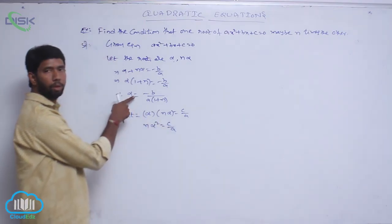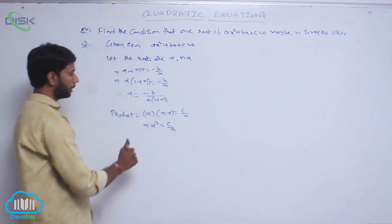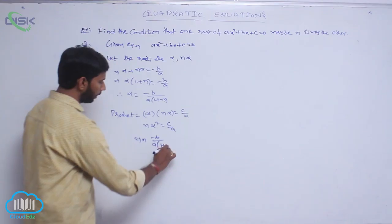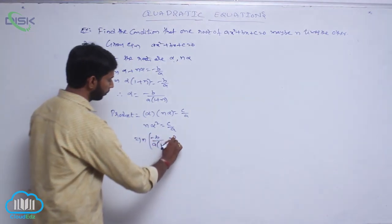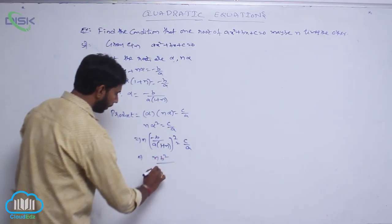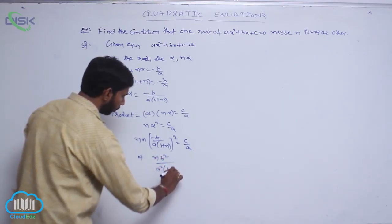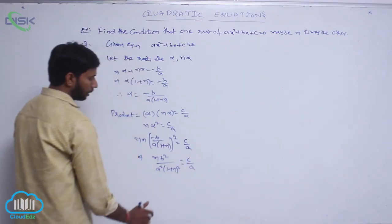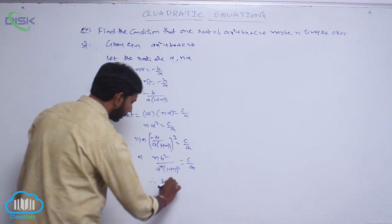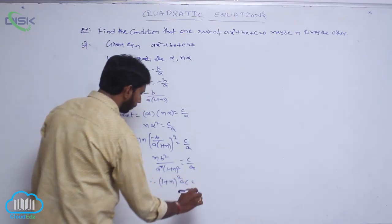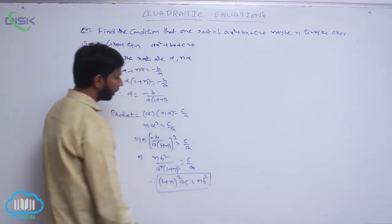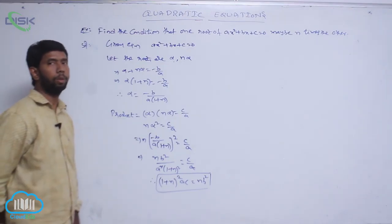Substitute the value of alpha: when alpha = -b / [a(1 + n)], that implies n × [-b / (a(1 + n))]² = c/a. That gives n·b² / [a²(1 + n)²] = c/a. Cancelling one factor of a and cross-multiplying, the condition is (1 + n)²·ac = n·b².